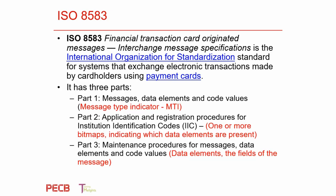Let's first look at ISO 8583 and the message specification, especially for payment cards. It's broken down into three parts: the messages, data elements, and code values — the MTI or message type indicator; the application and registration procedures for institution identification codes (IIC); and the maintenance and procedures for messages and data elements, which are the fields of the message itself.